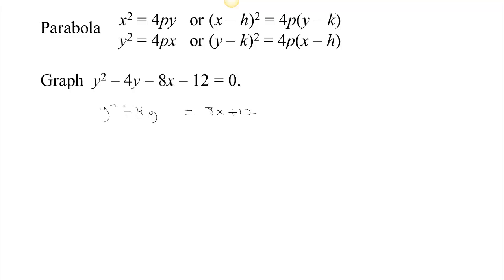Now we want to complete the square. Remember, half of negative 4 is negative 2. Negative 2 times negative 2 is 4, so I'm going to need to add 4 to both sides. And now this is a perfect square. It's y minus 2 squared. It's always y plus half of whatever is multiplying the linear part, so y minus 2 squared. Over here, we have 8x plus 16, so I can factor out an 8. And I have 8 times x plus 2.